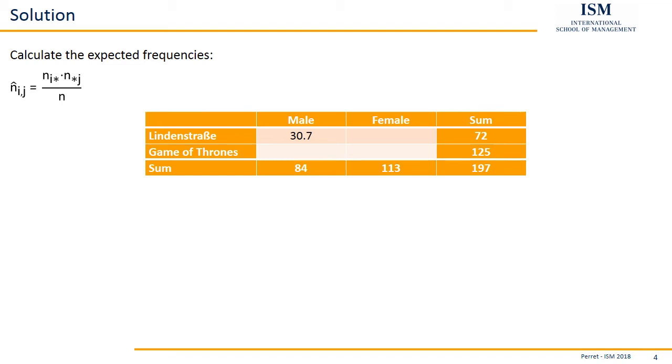If we do the same thing for male and Game of Thrones, we get 53.3 by multiplying 84 times 125 and dividing by 197. Then for female and Lindenstrasse, we have 72 times 113 divided by 197, giving us a value of 41.3. And the final value for female and Game of Thrones, here we multiply 113 with 125 divided by 197, giving us a value of 71.7.